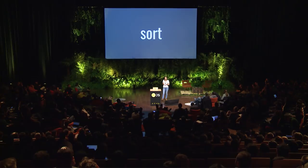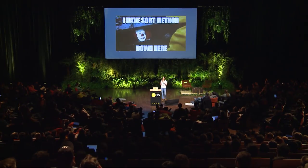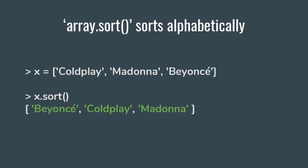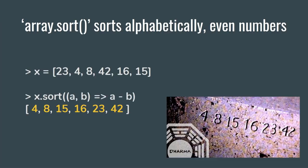If you talk about sorting, in JavaScript there is a standard sorting method for arrays. It works pretty naturally if you are sorting an array of strings. But if you are sorting an array of numbers, the result will be pretty crazy. In order to fix that, you should not forget to provide a compare function like the one on the slide.